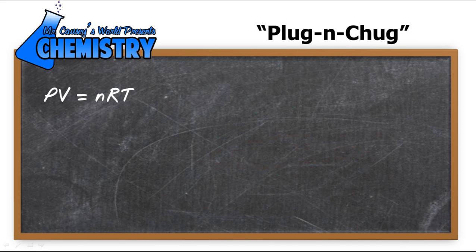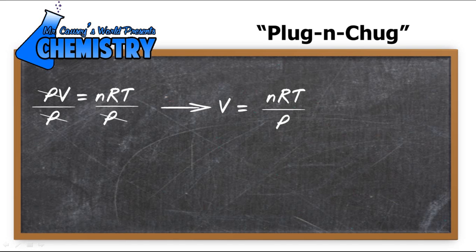So, write our equation down again. And let's go ahead and manipulate this so we have volume. Just a little bit of algebra. Whatever you do to one side, you do to the other. Just do it to both sides. So, now we have volume equals NRT divided by pressure.